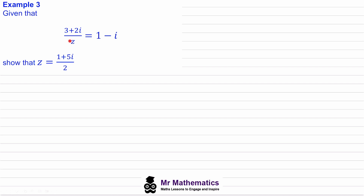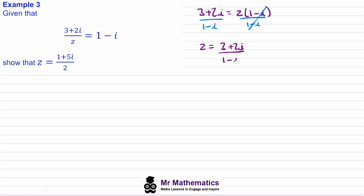First we need to move z from the denominator over to the right-hand side, so we multiply both sides by z. Now we have 3 plus 2i equals z multiplied by 1 minus i. Dividing both sides by 1 minus i, those terms cancel, giving z equals 3 plus 2i over 1 minus i. Now we can use the complex conjugate of 1 minus i to simplify this fraction, so we multiply both numerator and denominator by 1 plus i.